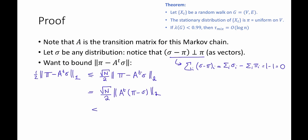So what that means is that this is at most square root of n divided by 2 times lambda of G to the t. Remember that this is either the second eigenvalue or the absolute value of the nth eigenvalue, whichever one is larger, times the L2 norm of pi minus sigma.